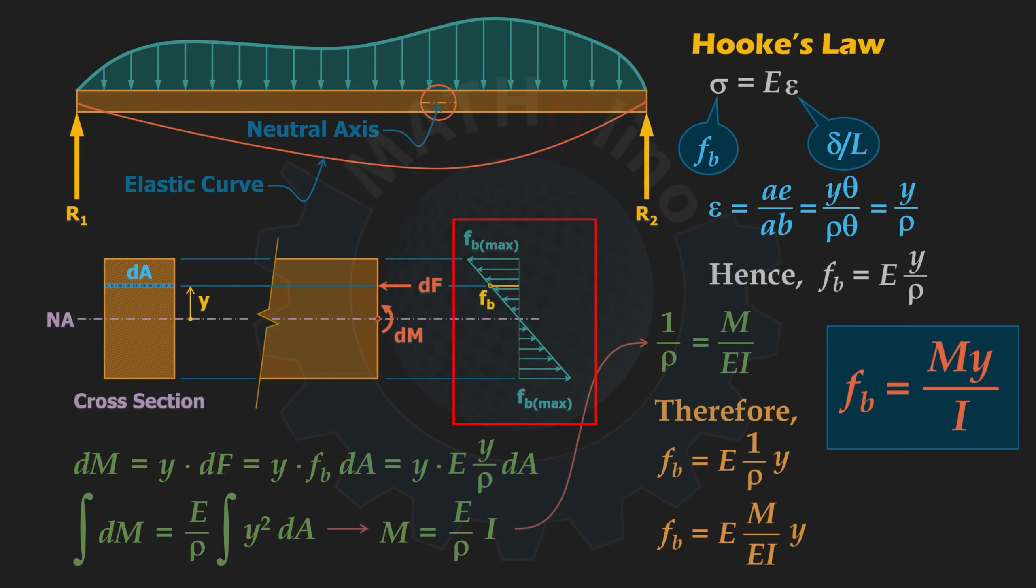Let us go back to our stress distribution. It is clear now why the distribution is linear. As you can see, the power of y in our equation is equal to one. This equation shows that at y is equal to zero, or at the neutral axis, the bending stress is zero, and fb will increase linearly as we go away from NA.